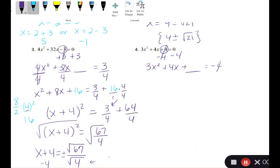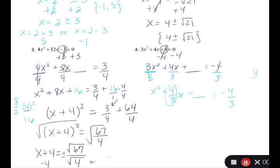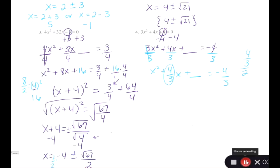The next step: check if the coefficient of the x squared term is 1 — it's not, so divide by that coefficient. It cancels out for x squared, but divide all other terms too. You don't have to divide the blank placeholder. So the equation becomes x squared plus 4 over 3 times x plus some number equals negative 4 over 3. Now take the b term and divide by 2: 4 over 3 divided by 2.